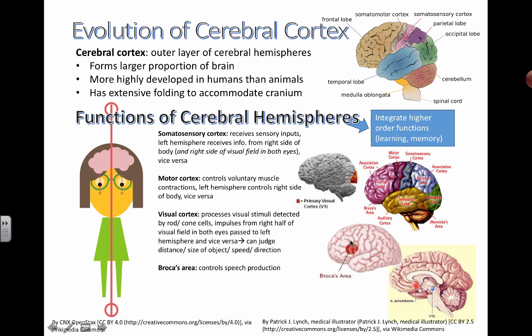Broca's area is related to speech. Patients who've had damage to this area have problems with their speech, and that's usually how we figure it out — we find someone with an issue, identify which part of their brain is involved, and put that in the books. That area is what Broca discovered.